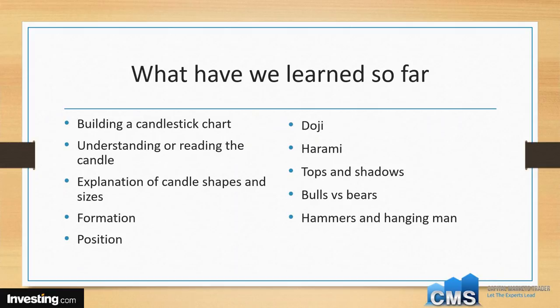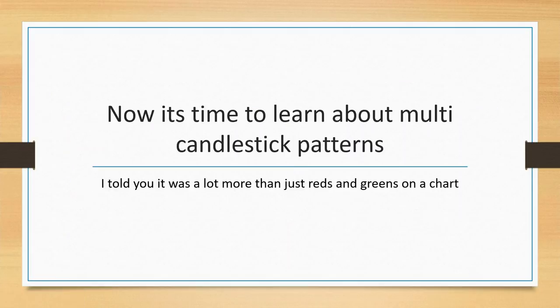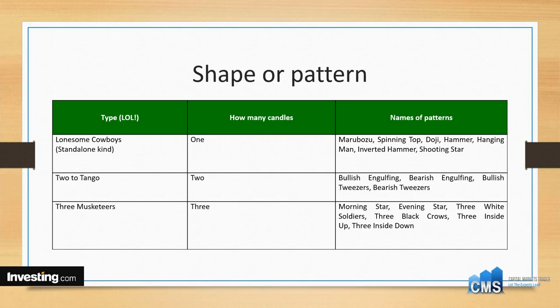So what have we learned so far? How to draw a candlestick on a chart, what the story of the candlestick is trying to tell us, the explanation of shapes, sizes, formations, and positions. We talked about dojis, haramis, tops and shadows, and the bulls versus the bears. We skipped over hammers and hanging men. The chart that's up on the screen I took off the internet — somebody cleverly called single candlestick patterns 'lonesome cowboys,' double patterns 'two for tango,' and triple patterns 'three musketeers.' I've put all of these into your handouts.